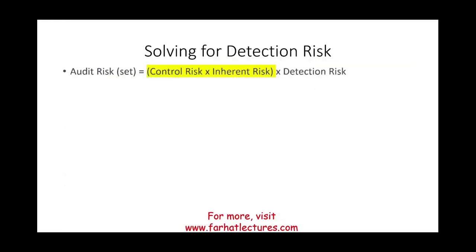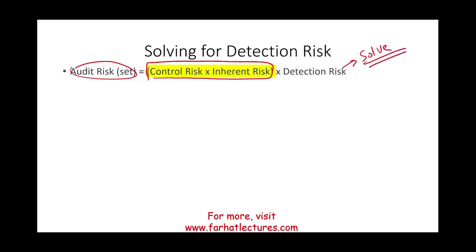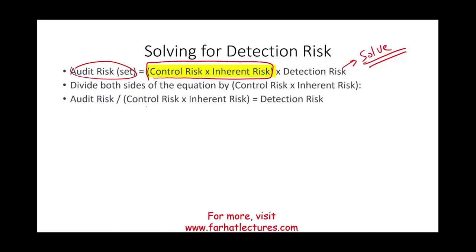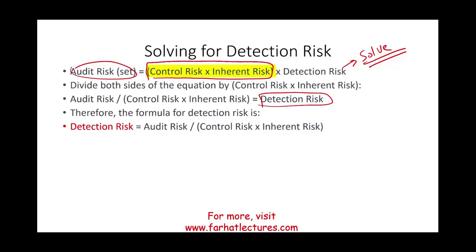To review: the auditor sets audit risk, and assesses control risk and inherent risk. What do we do with detection risk? We solve for it. The formula is: Detection Risk = Audit Risk ÷ (Control Risk × Inherent Risk), which is Audit Risk ÷ RMM. This is how we solve for detection risk.